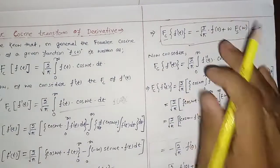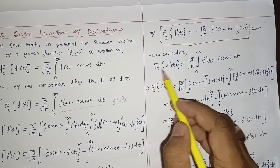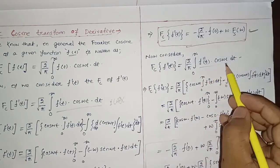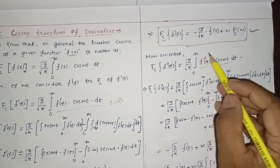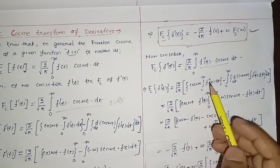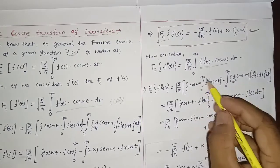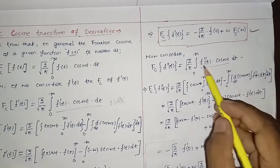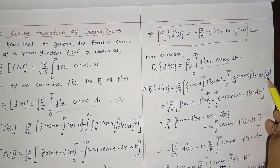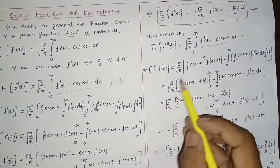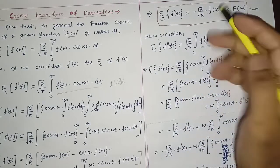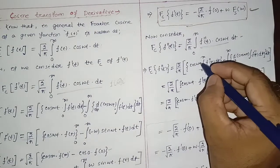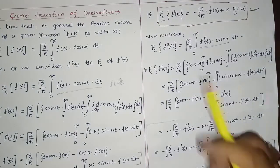Next we consider the second order derivative of f(t) and apply Fourier Cosine Transform over it: FC{f''(t)} = √(2/π)·∫₀^∞ f''(t) cos(ωt) dt. Again we apply integration by parts. Since f(t) is unknown, cos(ωt) is taken as the first function and f''(t) as the second function.